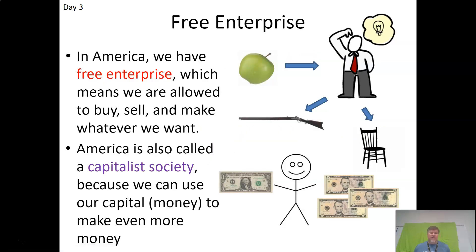Free enterprise in America — we have free enterprise, which means we are allowed to buy, sell, and make whatever we want. America is also called a capitalist society because we can use our capital or money to make even more money. That's this idea of free enterprise where we don't have lots and lots of rules. We try to make it so there aren't so many rules for a business — you can start a business, you can buy and sell things. We certainly have far more rules today than when our nation first began, but we work to keep from having too many rules on businesses so that they can produce goods in a way that satisfies the needs of our society.